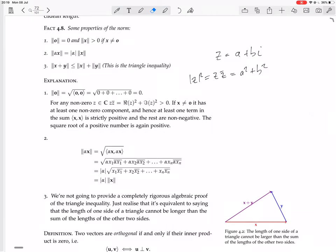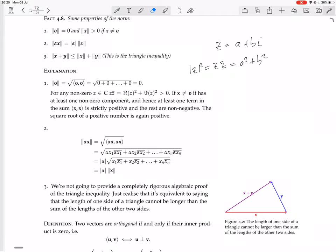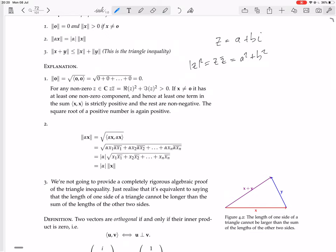Now, this one. You take the inner product of the thing with itself, and then you get, of course, this whole thing square rooted. You can factorize out. So in each of those terms, you have alpha x1, alpha x1 conjugate.